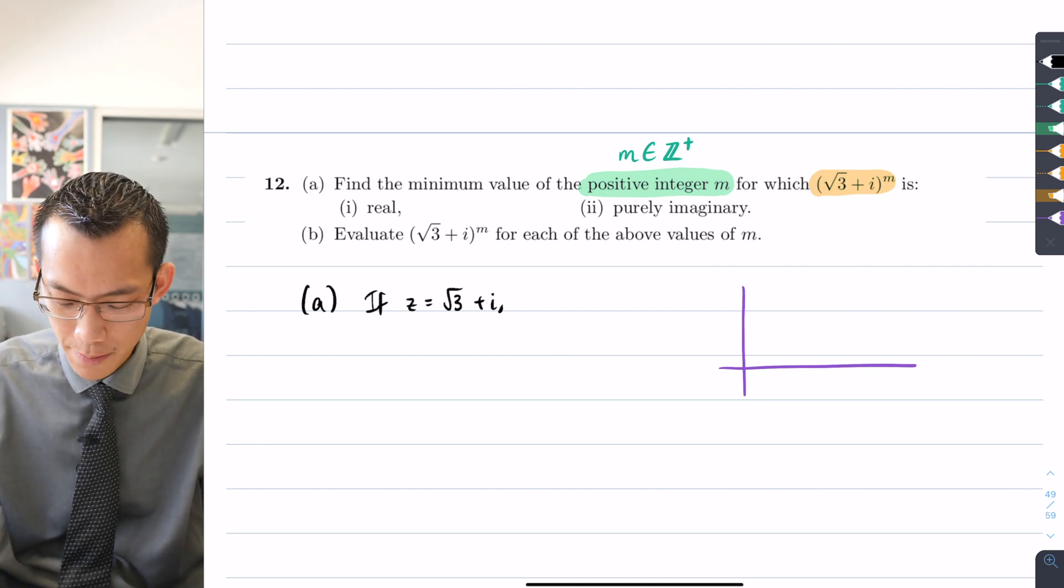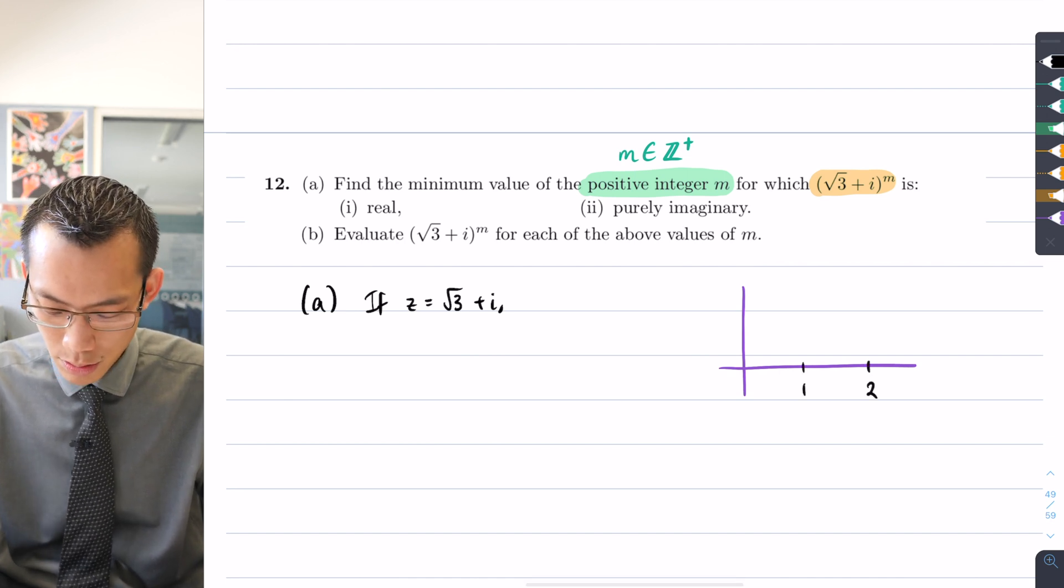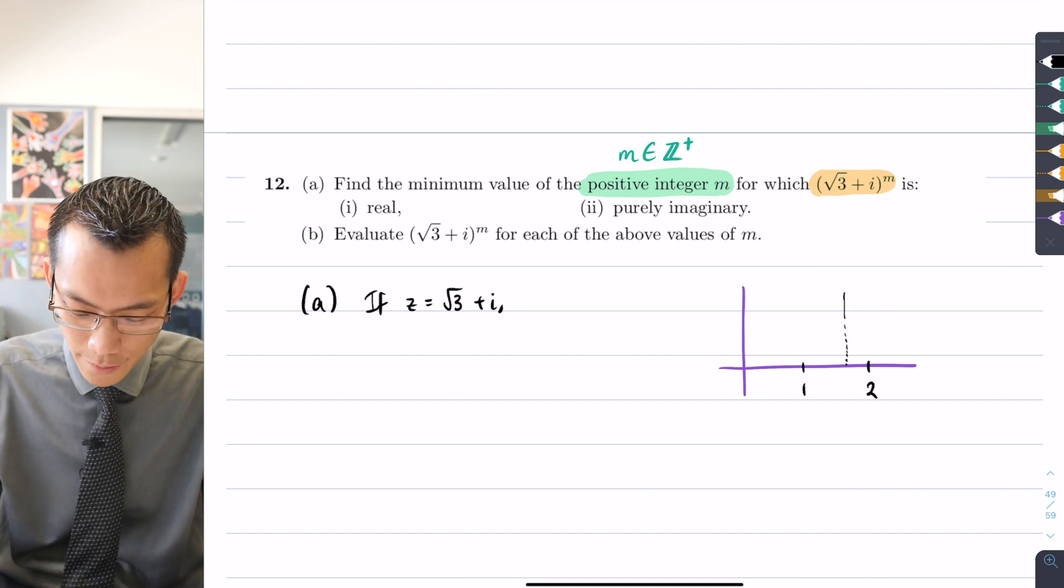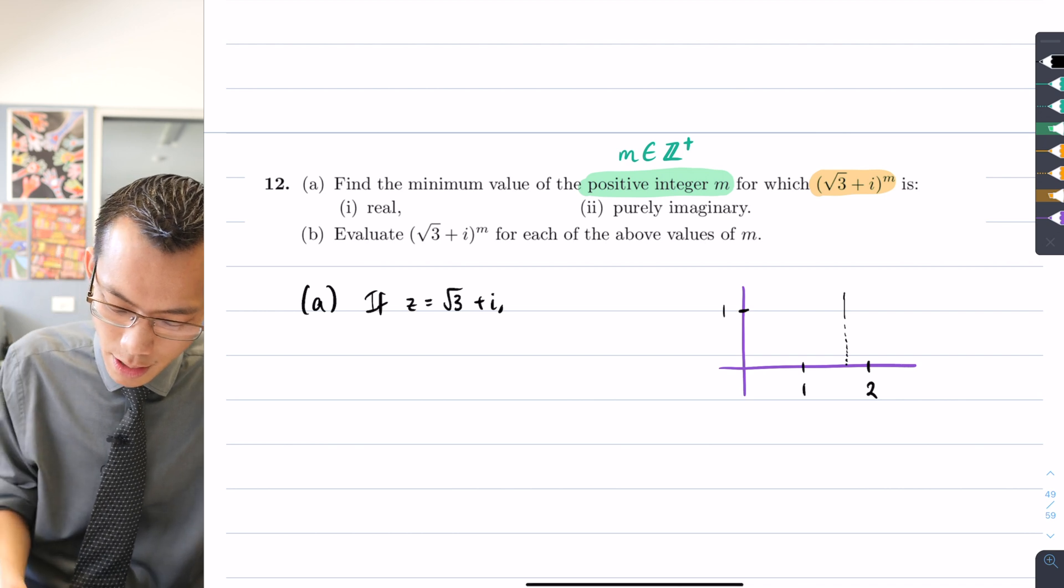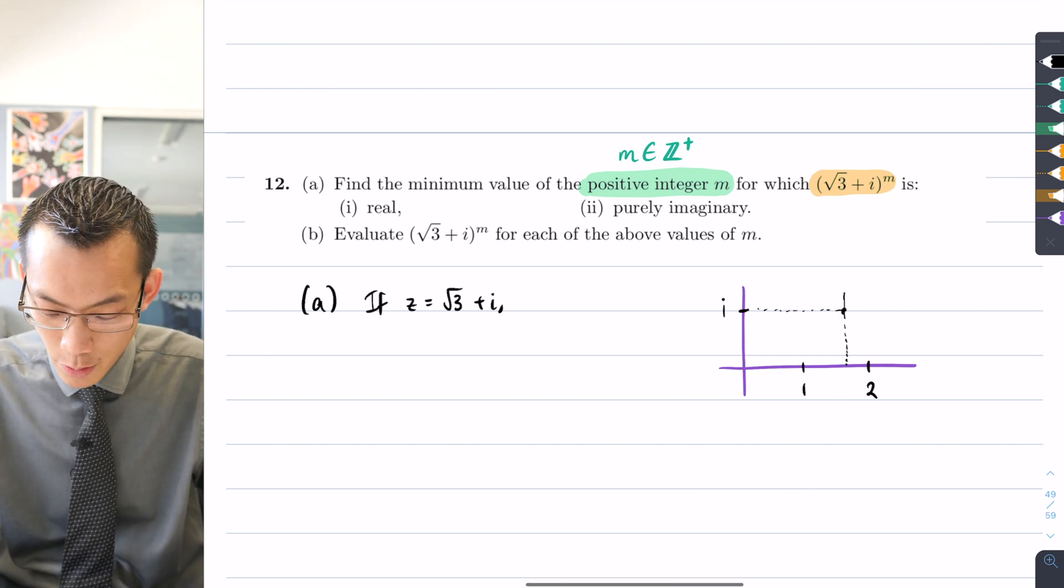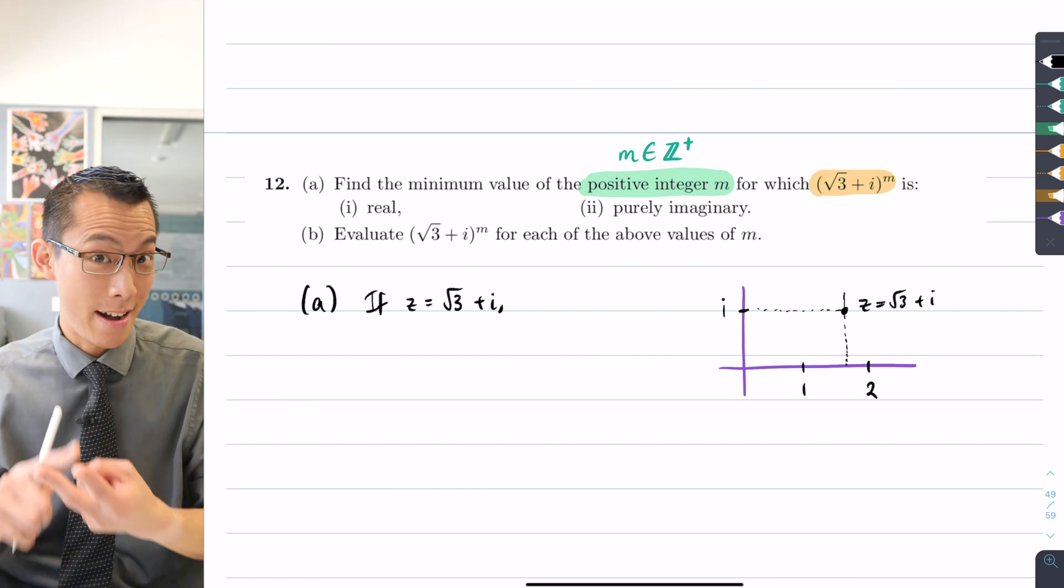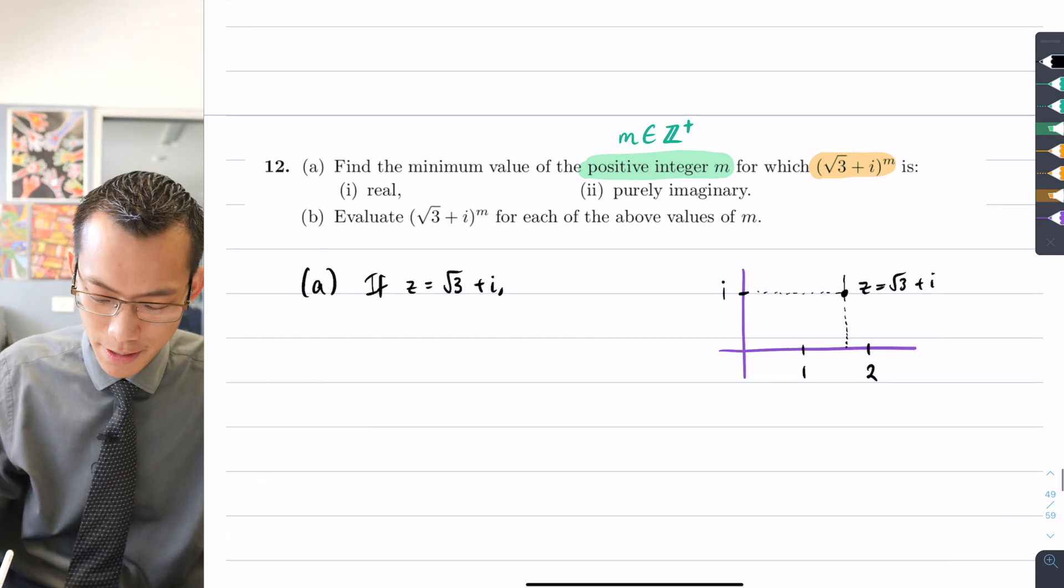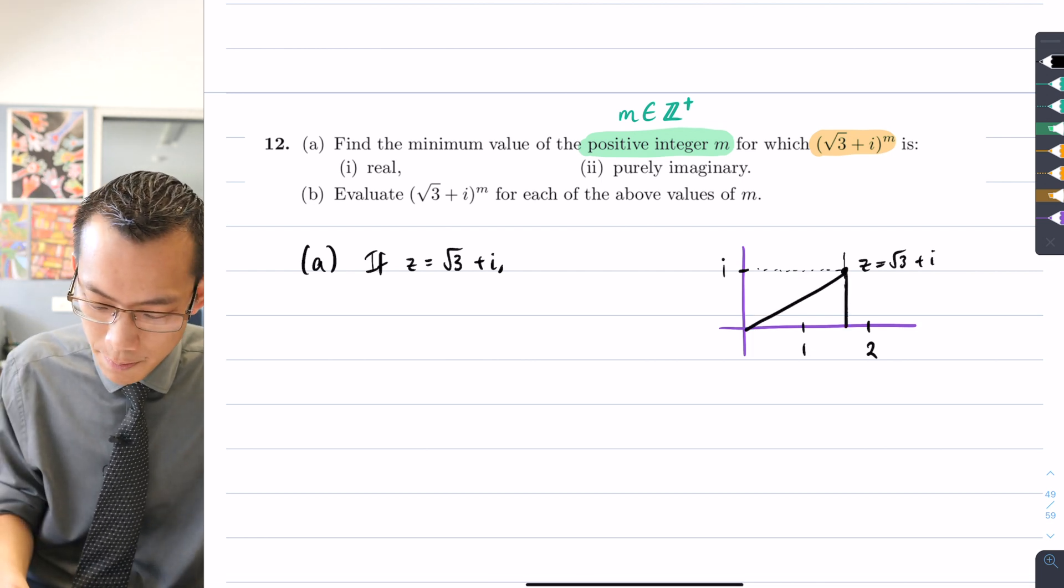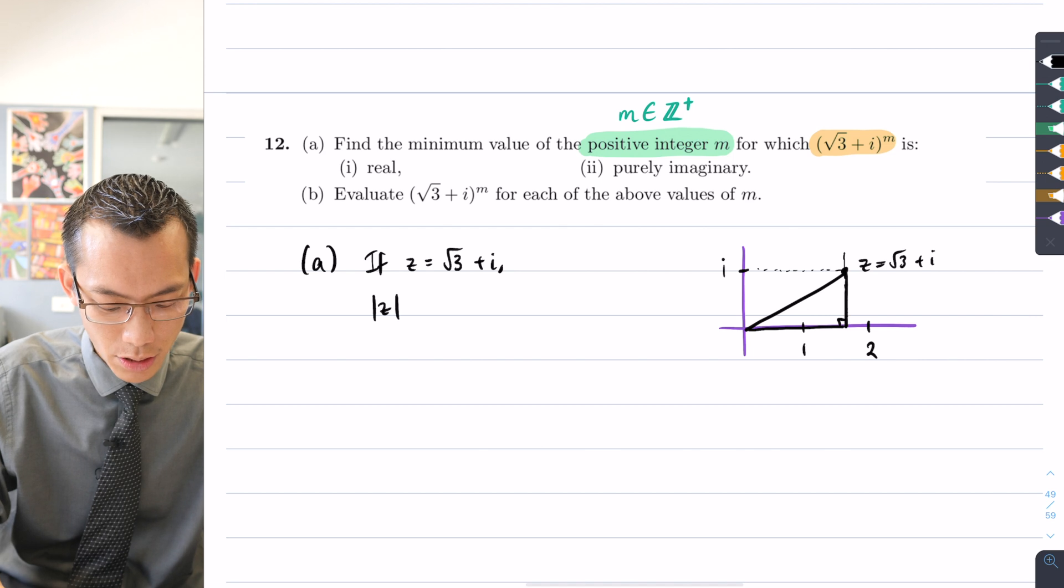If z = √3 + i, what is it in mod-arg form? You should start to get used to these numbers. A number like √3 + i, you're going to become quite familiar with working out where this is and its values in both rectangular and polar form. If I do a quick sketch, √3 is about 1.7, so that's z = √3 + i.